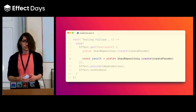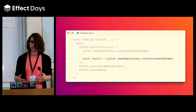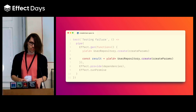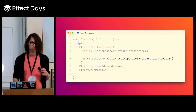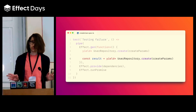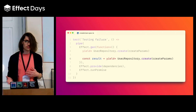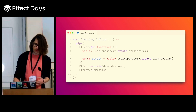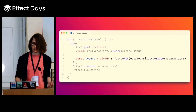Now, what we want is to verify that the result of that second call — the one that we expect to fail — is indeed a failure. But how do we catch that failure to assert on it? Because right now, the test is just going to crash, because create is going to crash. To do that, we're going to use effect.exit.